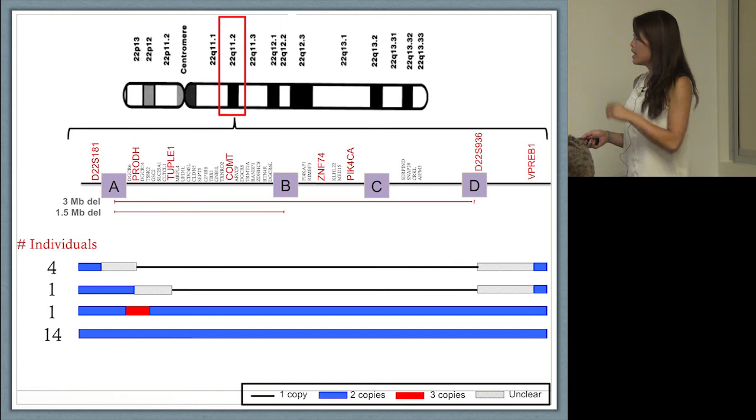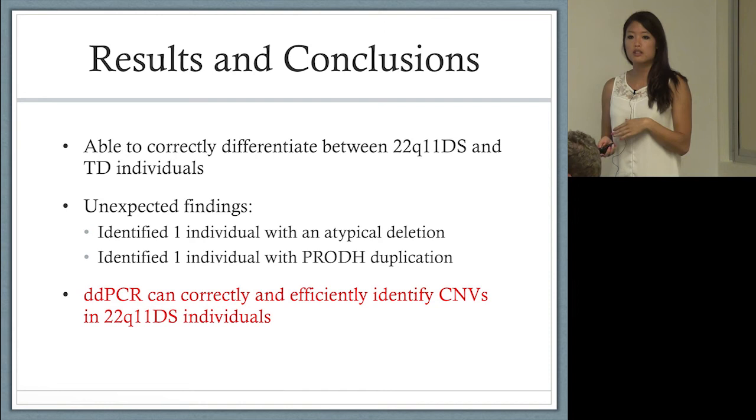We were very easily able to differentiate between 22Q individuals and control individuals, which we were very excited about.